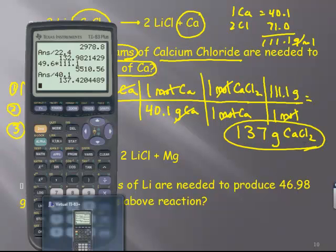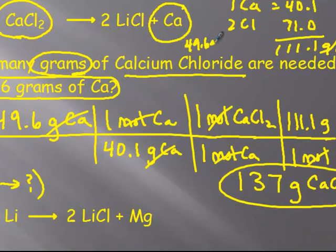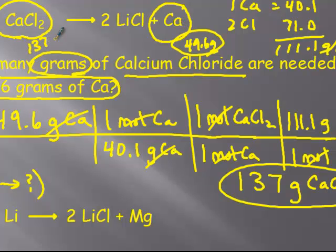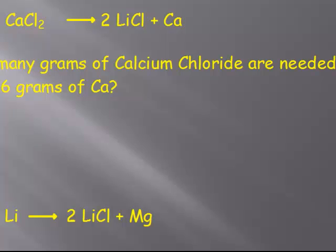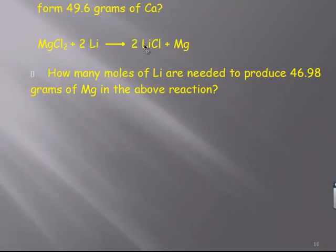So now what does that mean in real terms? If I were in lab and I needed 49.6 grams of this, well, the stoichiometry tells me that if I want 49.6 grams of calcium, I have to start with 137 grams of calcium chloride. So that's really what we found. All right, so let me erase this. And let's try the second one.